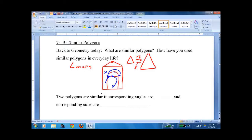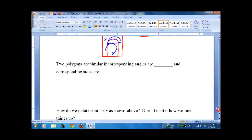So two polygons are similar if the corresponding angles are all congruent and the corresponding sides are proportional. Here's my larger proportional triangle, here's my smaller one, and we'll label this and we'll label the angles.